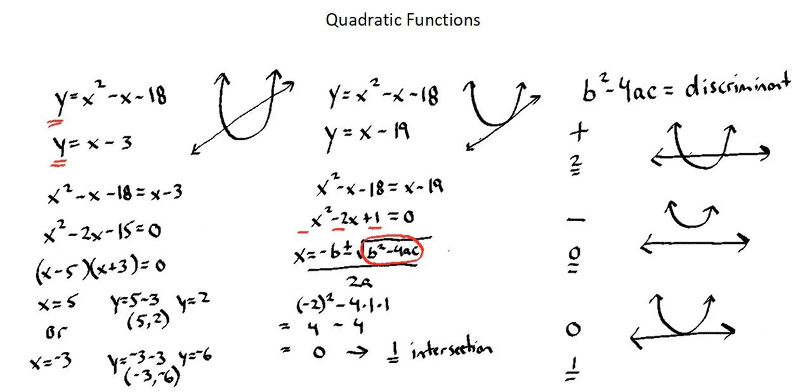Now we could work through to an actual solution for that point of intersection. But again, let's assume that in this context, we're simply asked to evaluate for the number of points of intersection between y equals x squared minus x minus 18 and y equals x minus 19.